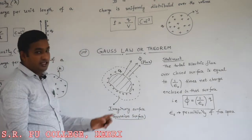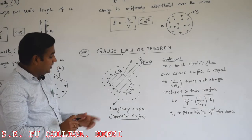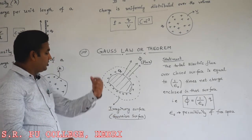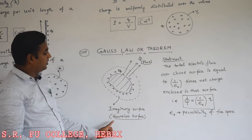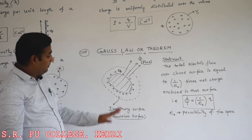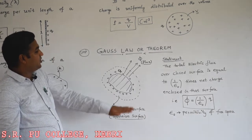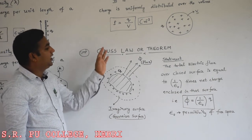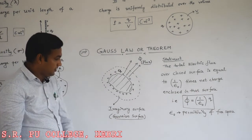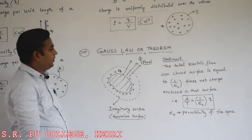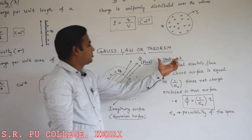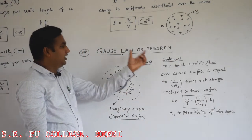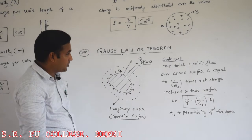The imaginary surface we call the Gaussian surface. In reality, that surface does not exist — it is just imaginary. By using this Gaussian surface, we have to get the expression for total electric flux. Using this concept, we can think about the statement for Gauss law or theorem for electrostatics.